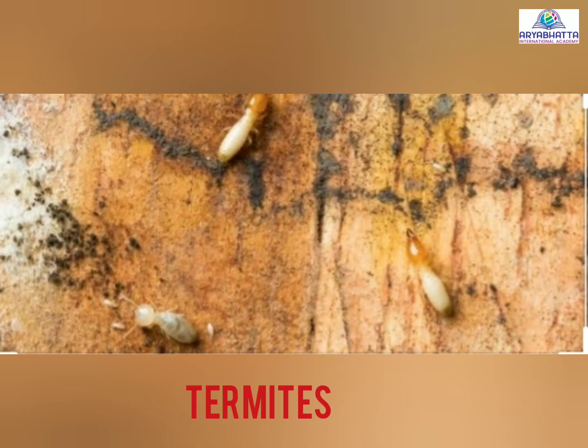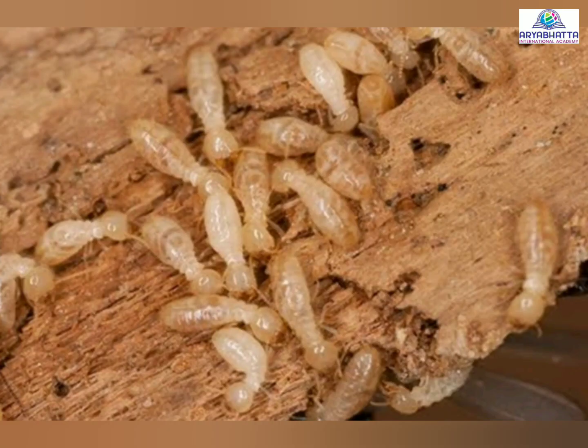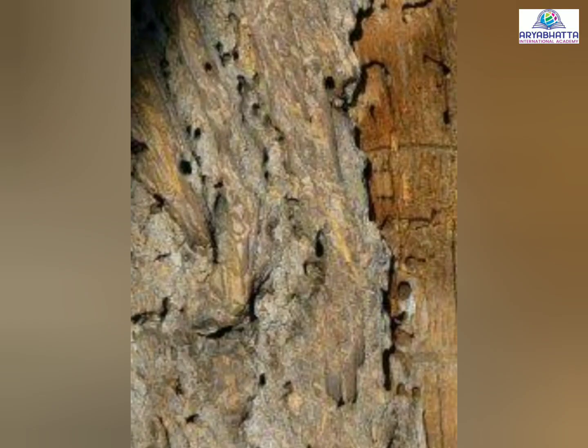Termites also live in colonies. They make their colonies in places such as damp furniture and fallen trees. They basically feed on wood. They are useful in cleaning forests as they eat dead and decaying trees, but they damage wooden furniture.